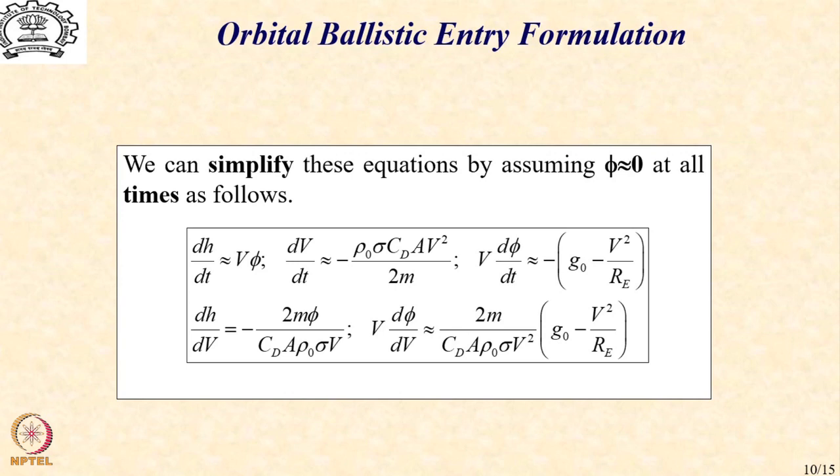So, the moment we do that we get dh by dt as V phi, dv by dt remains a non-linear differential equation in V square. The normal equilibrium has V d phi by dt. And with that, we get the following two differential equations, one for the altitude in terms of velocity and other one velocity in terms of the angle phi.